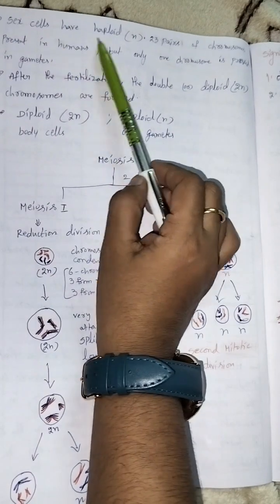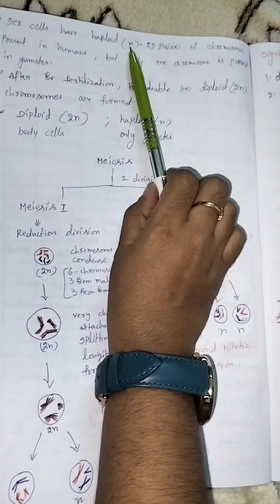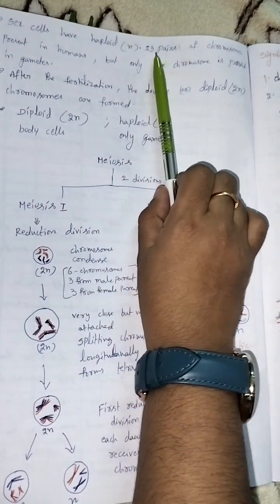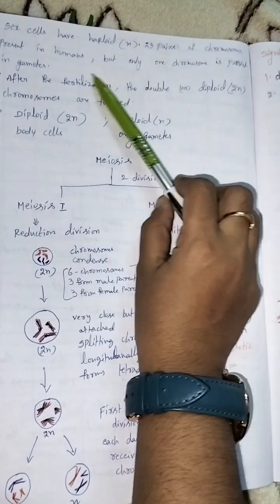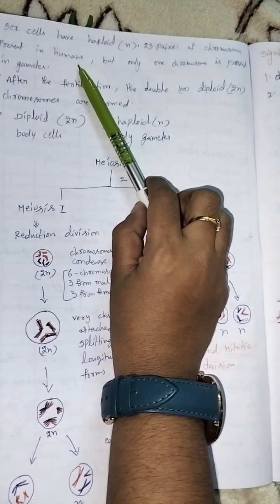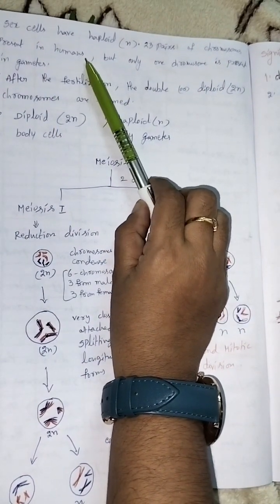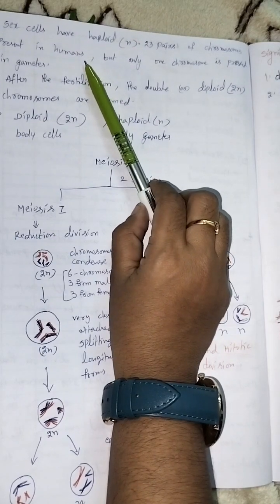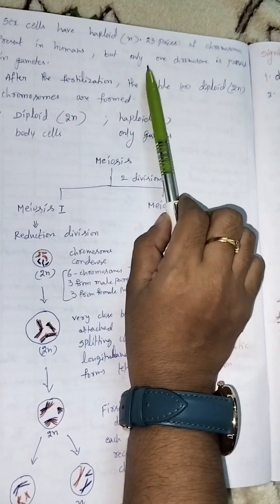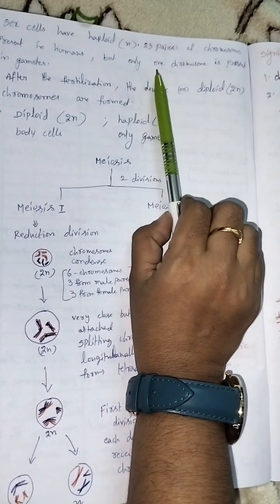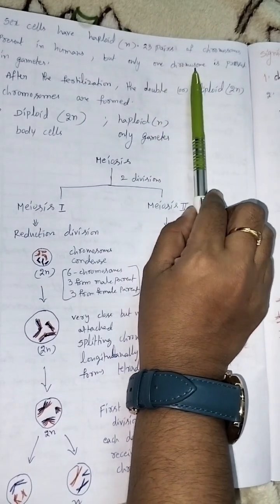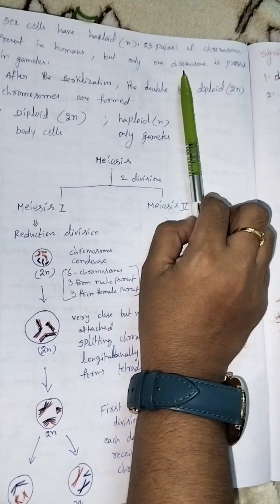Sex cells are haploid, denoted by N. In humans, 46 chromosomes or 23 pairs of chromosomes are present, but only in the sex cells have one set of chromosomes present.